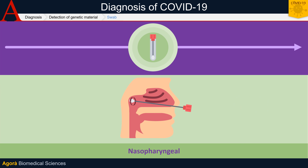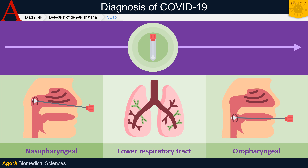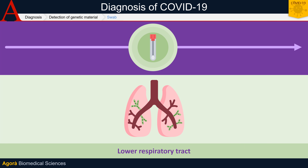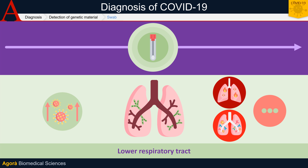Moreover, in many cases it is preferable to take a sample directly from the lower respiratory tract through bronchial aspiration or, when possible, bronchoalveolar lavage fluid. This is because in case of a viral infection, this site has a very high viral load and therefore the infection can be detected more easily. This sample is mainly taken from subjects at an advanced clinical stage, such as pneumonia or ARDS.